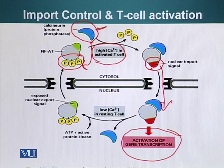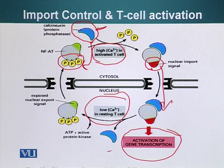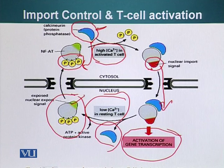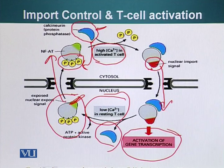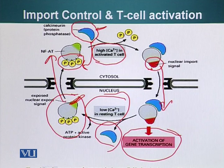Once the T cell has been activated, or when we want to deactivate the T cell, the cell lowers the calcium concentration, which makes this phosphatase inactive. When this phosphatase becomes inactive, NFAT becomes phosphorylated again and exposes the nuclear export signal, which allows this protein to be kicked out of the nucleus. This is a classic example of a protein with both export and import signals, both of which are regulated — hidden until needed, then exposed using other members of the cellular machinery.